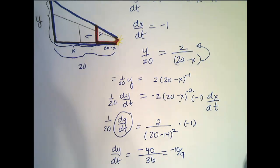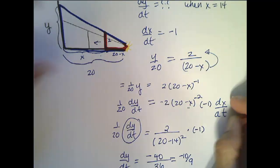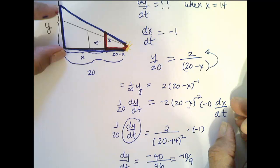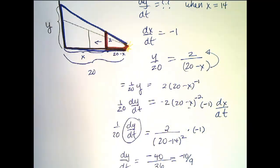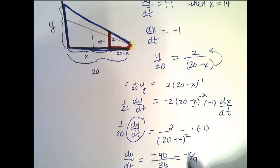Now, does it make sense that our answer is negative? It should, because what I see here is the length of this shadow is getting smaller as the man walks closer towards the building. So that negative tells me that my Y is changing in a decreasing way.